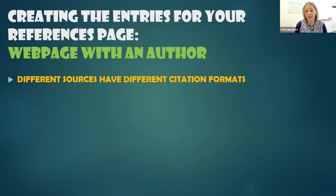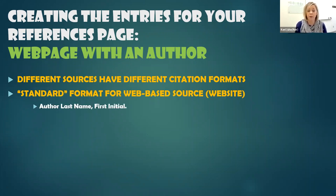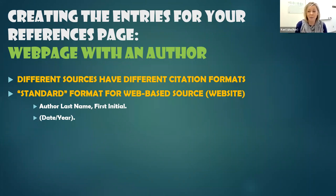In APA, different source types have different citation formats, so we're looking for a few key pieces of information anytime we're using a web page. We're going to be looking for the author's last name and first initial.